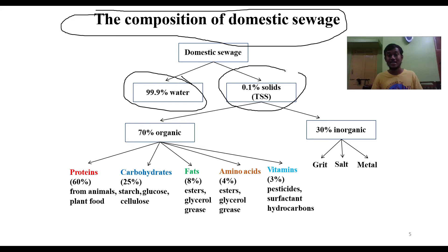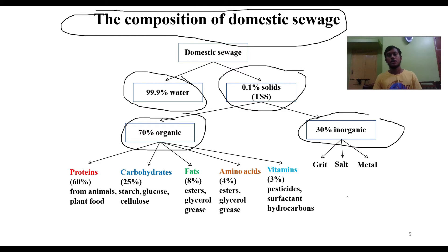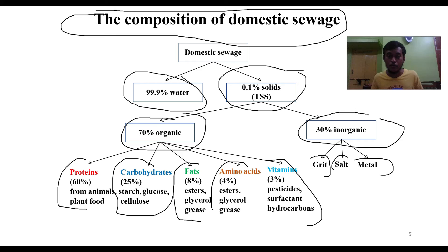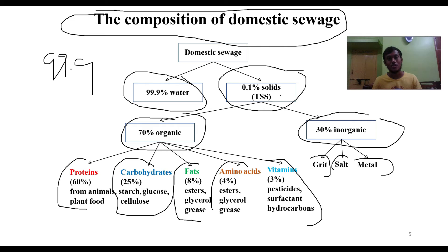Of the total 0.1% solids in domestic sewage, 70% are organic and 30% are inorganic. The organic fraction includes proteins from animals, plants, and organisms; carbohydrates such as starch, glucose, and cellulose; fats; amino acids; and vitamins. The inorganic fraction includes salts and metals commonly found in surface water.